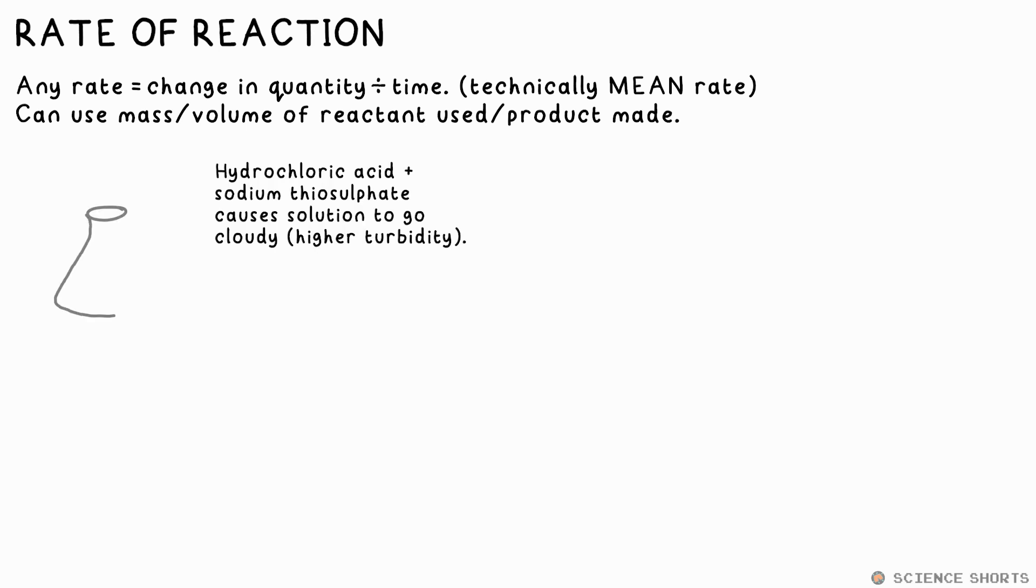An experiment on this could be reacting hydrochloric acid and sodium thiosulfate in a conical flask sitting over a piece of paper with a cross drawn on it. As the reaction progresses, the product formed, it's a precipitate, turns the solution cloudy. We say the turbidity has increased. We stop the timer when we can no longer see the cross from above the flask.